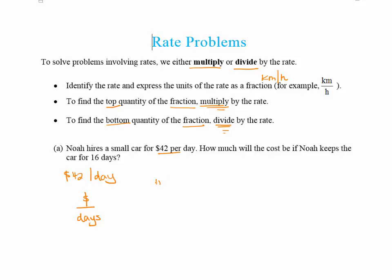So now I'm going to write down what I'm trying to do. I'm trying to find the hire cost. What is it going to cost to hire the car? And to do this, we know that we are trying to find the cost. So we're trying to find the top part of my rate. And the rule says if we're finding the top quantity, we have to multiply by the rate. So we're trying to find the top, so we're going to multiply the days by the rate.